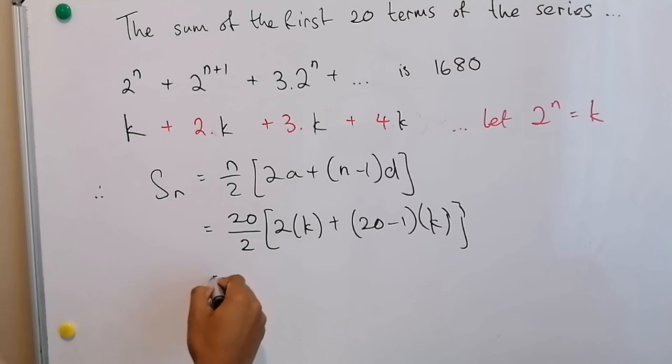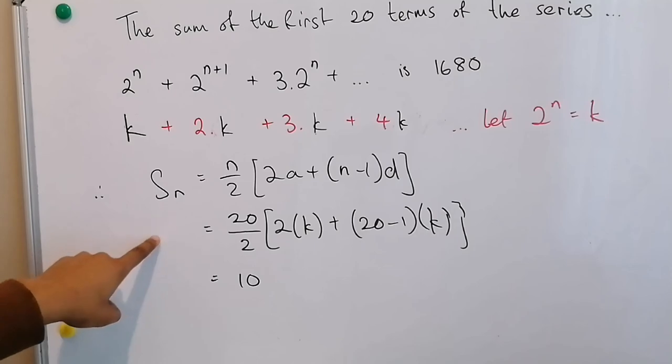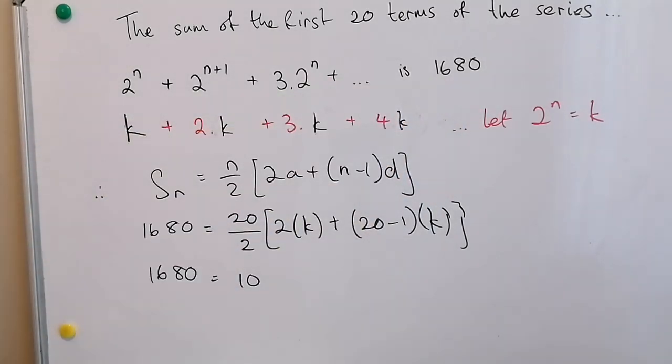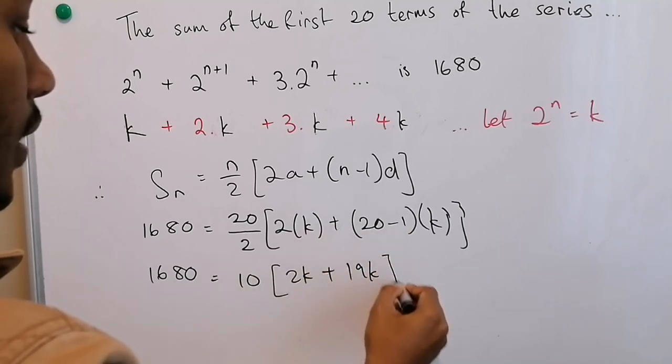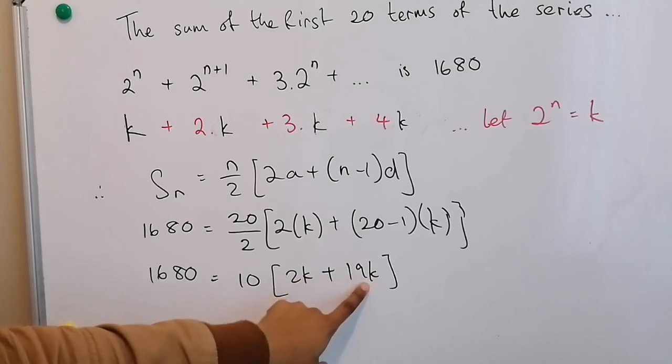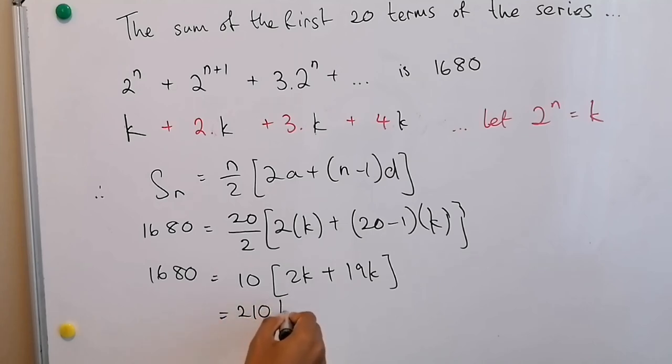So we're going to simplify this. 20 divided by 2 is 10. Oh, one thing I forgot to substitute is the sum of the series 1680. Then I'm going to continue to simplify. This is 2k plus this will be 19k. 2 plus 19 is 21. If I multiply that by 10, that's 210k. And then if we divide 1680 by the 210, k is therefore equal to 8.